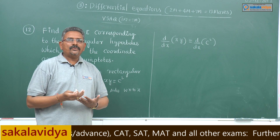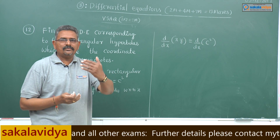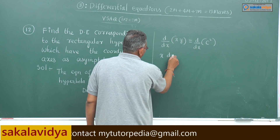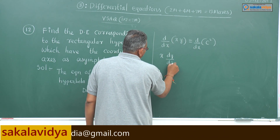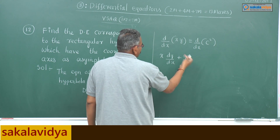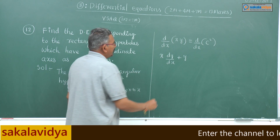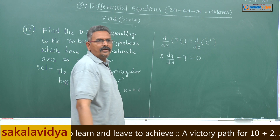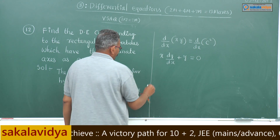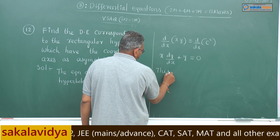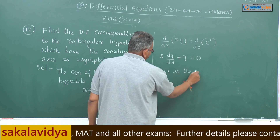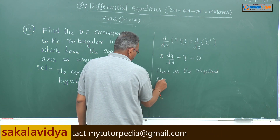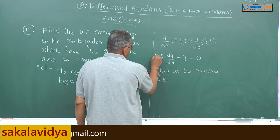Using the product rule: x(dy/dx) + y·1 = 0, since the derivative of a constant c² is 0. So x(dy/dx) + y = 0. This is the required differential equation.